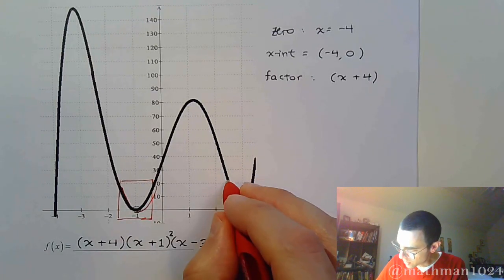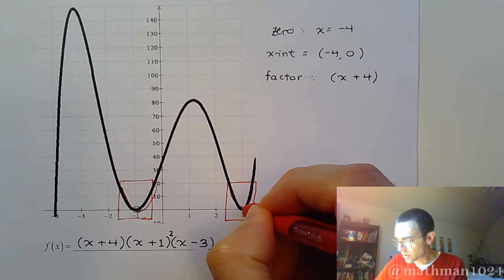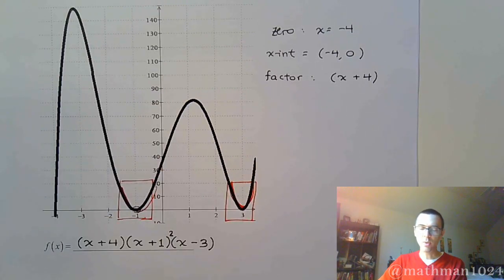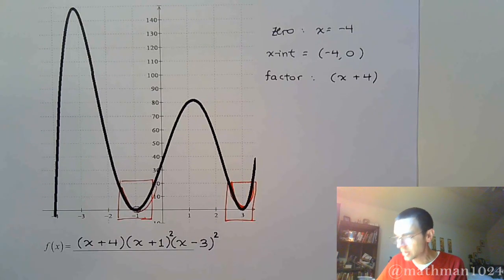Also, over here, if you were to zoom in and just focus on this part of the graph, you see that this guy is also bouncing away at that x-intercept. He's bouncing away just like a parabola. So it means he's also going to be squared.